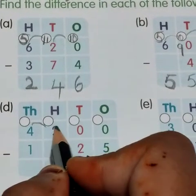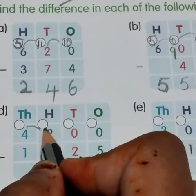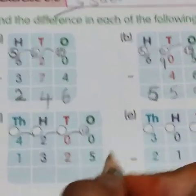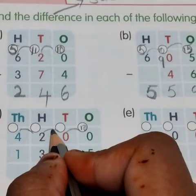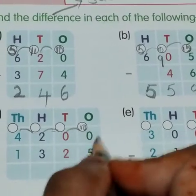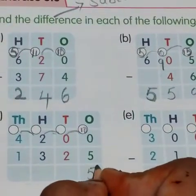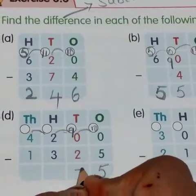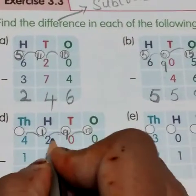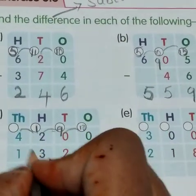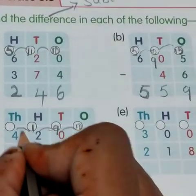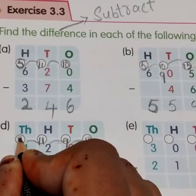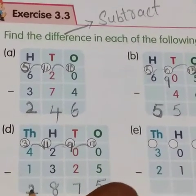So, 0 minus 5 we cannot do. From here we have to give borrow from every column. This will become 10. 10 minus 5 is 5. As it has given borrow, this will become 9. 9 minus 2 is 7. This will become 1, because 2 has given borrow. 1 minus 3 we cannot do, so we take borrow — this will become 11. 11 minus 3 is 8. And this will become 3. 3 minus 1 is 2.